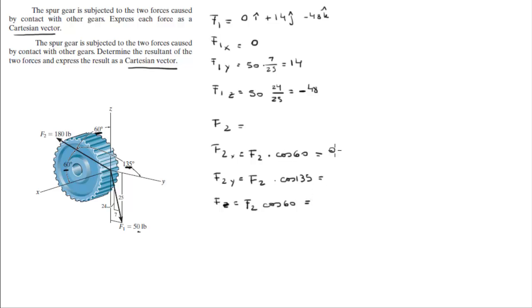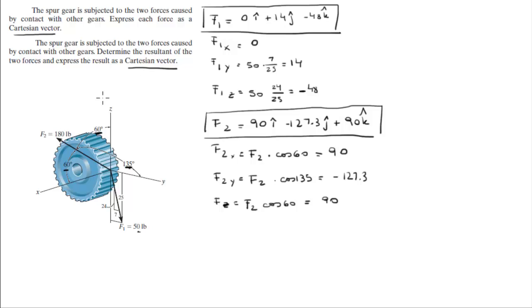When you calculate these numbers it's going to give you 90, negative 127.3, and 90 again. So F2 is 90i minus 127.3j plus 90k. So these are the two vector representations of the two forces which takes care of our first problem.